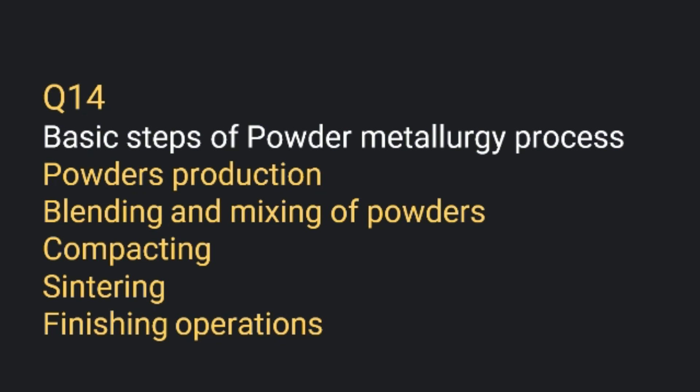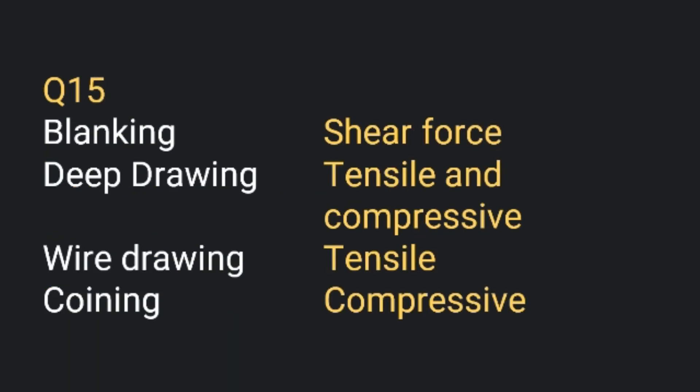In blanking, shear force is generated. In deep drawing, both tensile and compressive forces are generated. In wire drawing, only tensile force is generated. In coining, compressive force is generated. A related operation is embossing — in embossing the flow of metal is volumetric, whereas in coining the flow of metal is at the surface only. This is the basic difference between coining and embossing, which is commonly asked in exams.